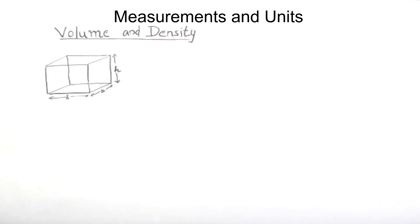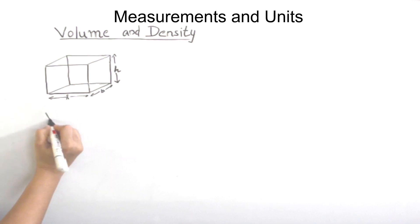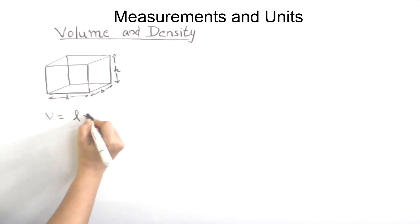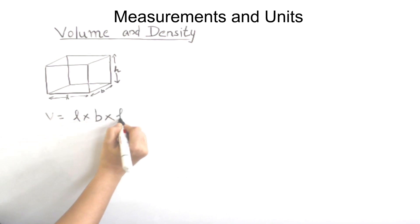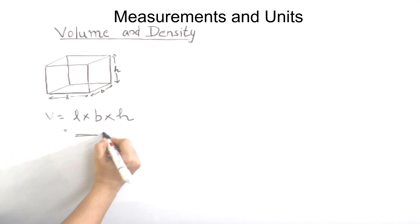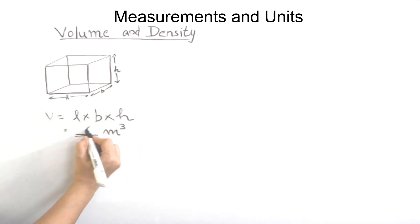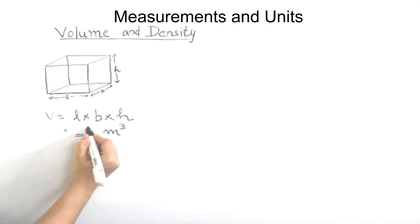Volume is calculated using length, breadth, and height. Volume is equal to length multiplied by breadth multiplied by height. When we multiply, we get a numerical value in meter cube — for example, a volume of 6 meter cube.